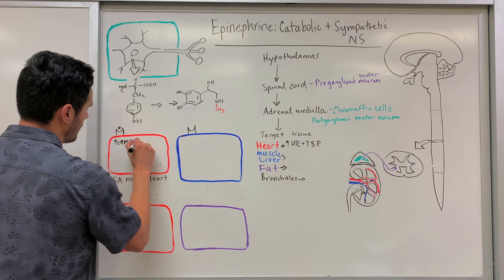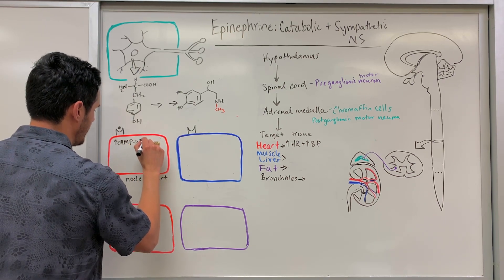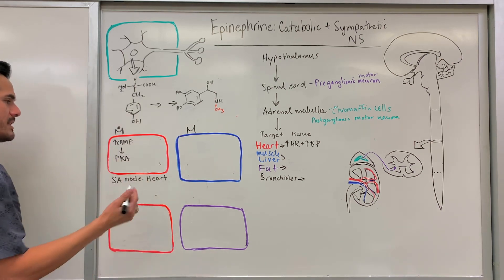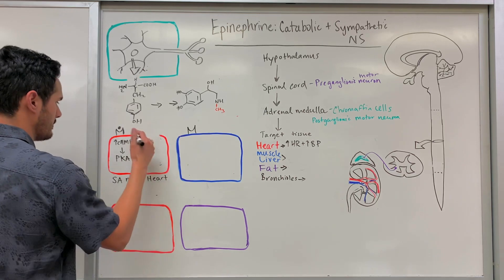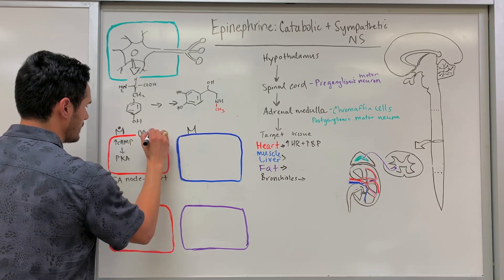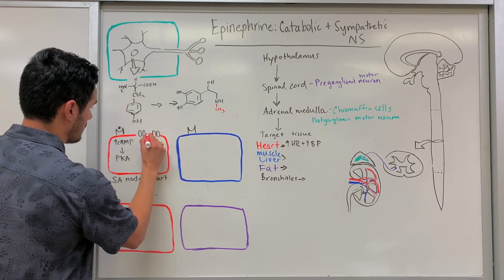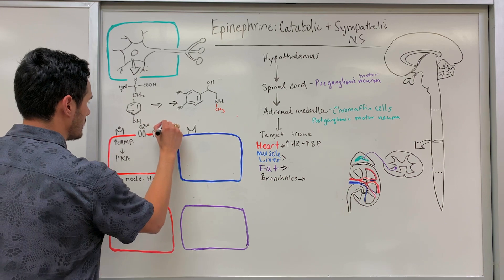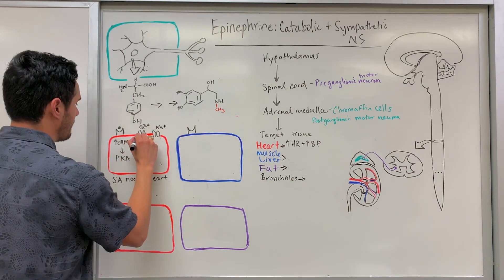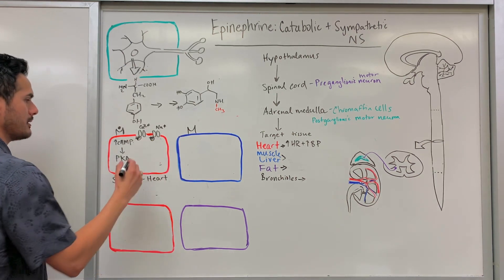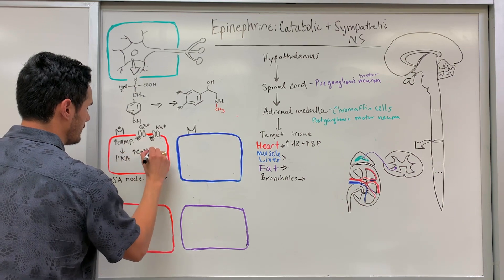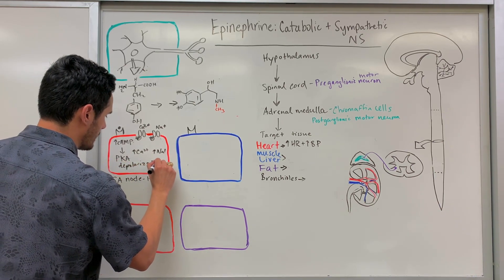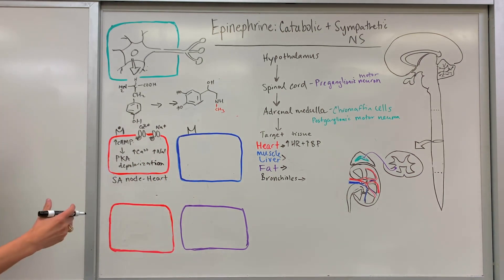The increased cyclic AMP activates protein kinase A (PKA). At the surface of the SA node we have calcium channels and sodium channels. Activating PKA adds phosphate groups to those calcium and sodium channels, resulting in an influx of calcium and sodium, causing depolarization. With depolarization, electrical signals are transmitted more rapidly, increasing the heart rate.